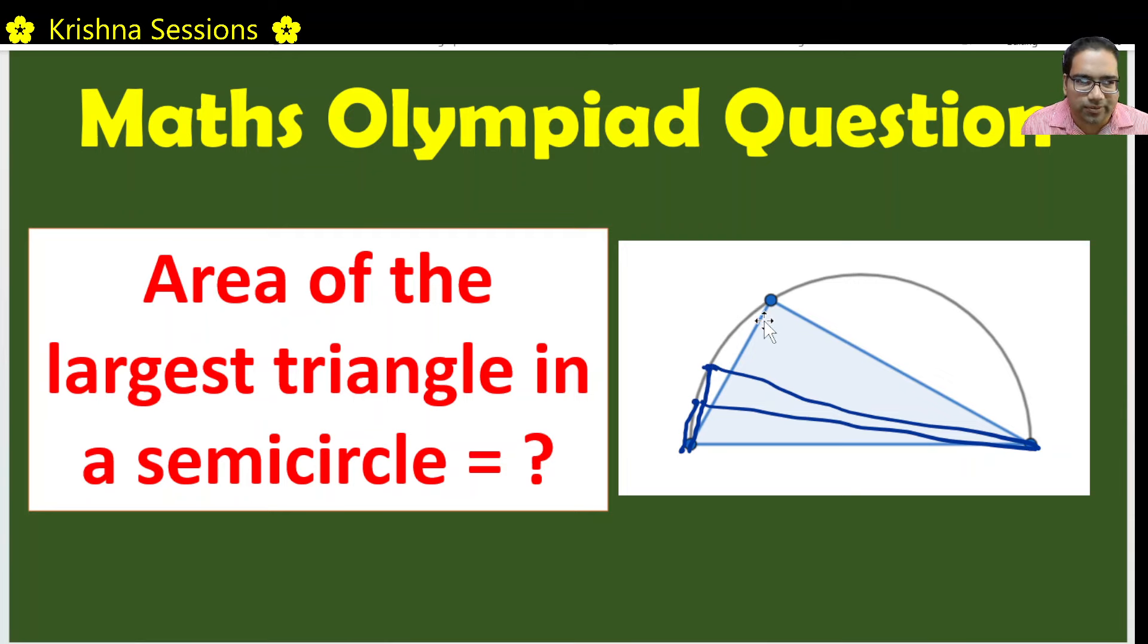Even mathematically, the base is same. The base of 1, 2, 3, 4 - all the four triangles is the same. It is the diameter of the circle. But the height is reducing in this case. The height is lowest here, it is lower here than this, and this one is lower than this.